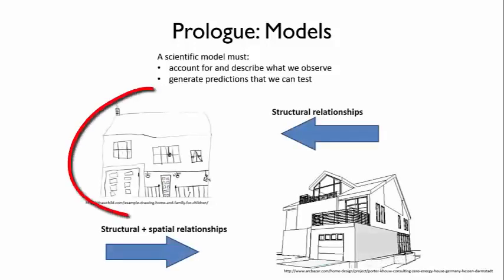For instance, a child's drawing of a house involves structural relationships. It shows that the house has a roof and walls and a door and windows, that the roof is attached to the walls, and that a door is in the wall.